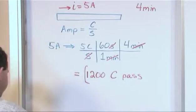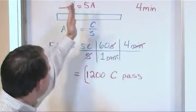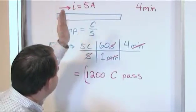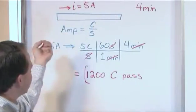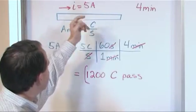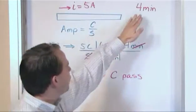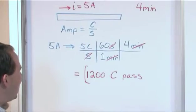What this means is that if I could cross-section the wire anywhere I want, since it's constant current, I could shut it off and cut it, or if I had a counter where I could count coulombs flowing through a cross section, over a 4-minute period, 1200 coulombs of charge would pass.